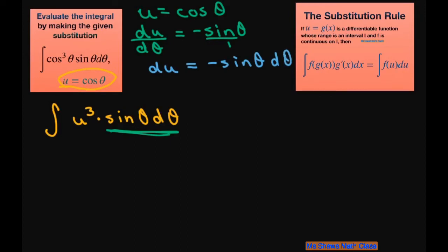We need to solve for sin θ dθ. So to solve for that, we divide both sides by negative. So sin θ dθ, if you multiply through by negative, is going to be -du.